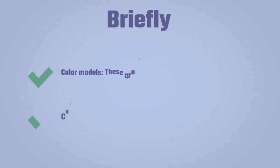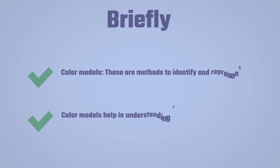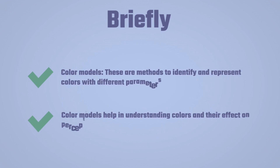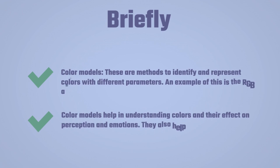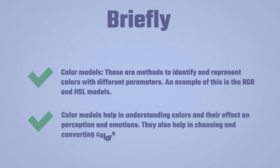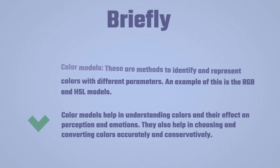Briefly, color models are methods to identify and represent colors with different parameters. An example of this is the RGB and HSL models. Color models help in understanding colors and their effect on perception and emotions. They also help in choosing and converting colors accurately and consistently.